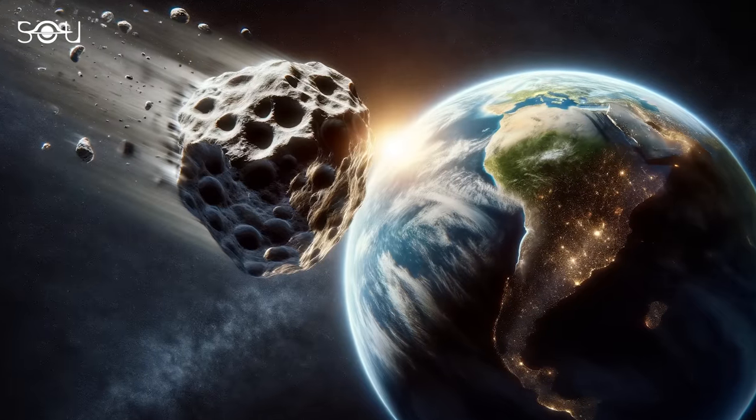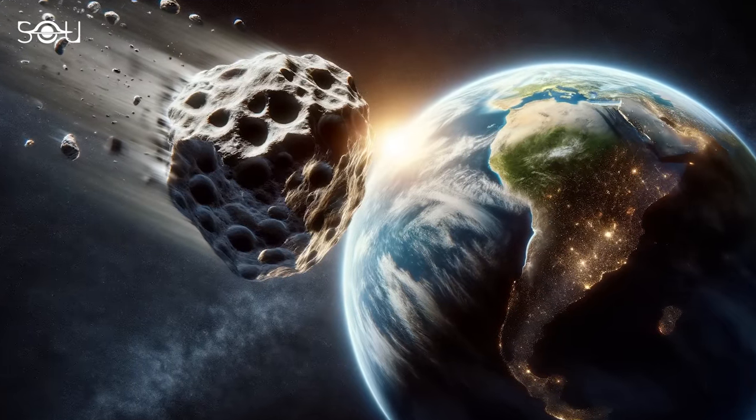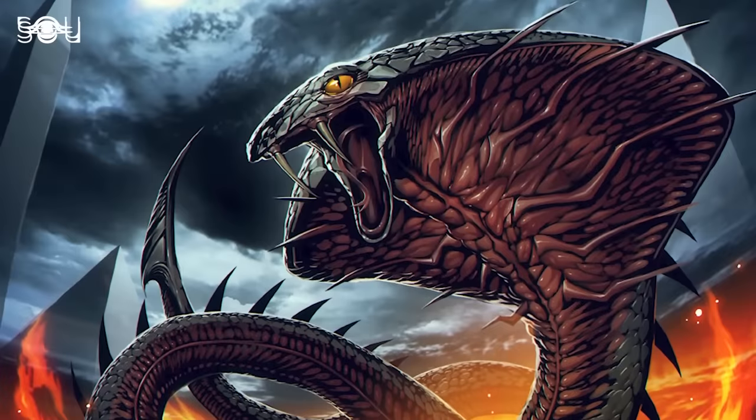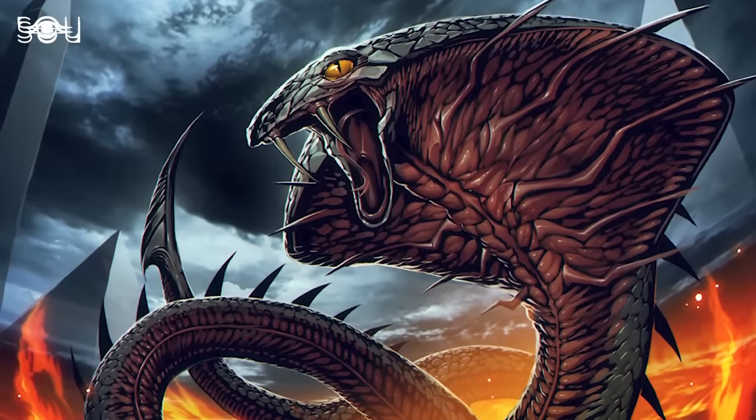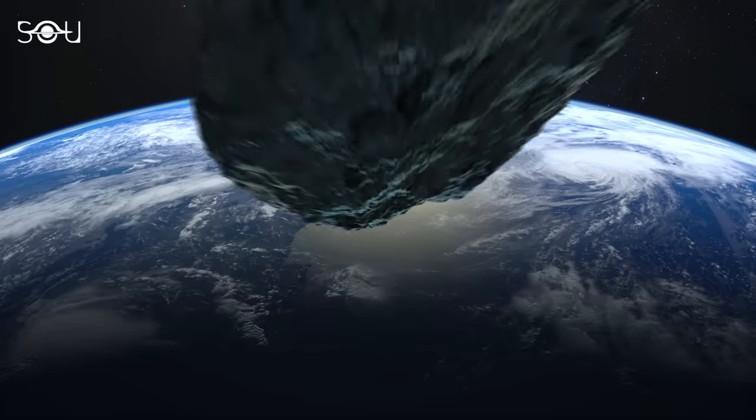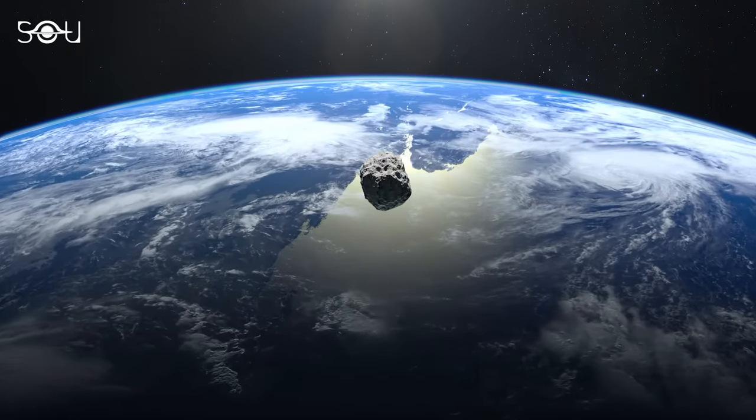A 1 in 37 probability was the highest ever calculated for a significant asteroid impact in recorded history. This is when the asteroid earned its name Apophis after the Egyptian god of destruction and became known as the most dangerous asteroid ever discovered.